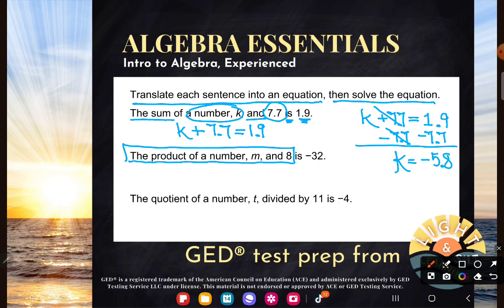Well, sum is an addition expression, but product is a multiplication expression. Now, I suppose you could write it like this, M times 8. But I wouldn't because that's not how mathematicians write it. And in fact, in the land of algebra, when you start writing something like that,